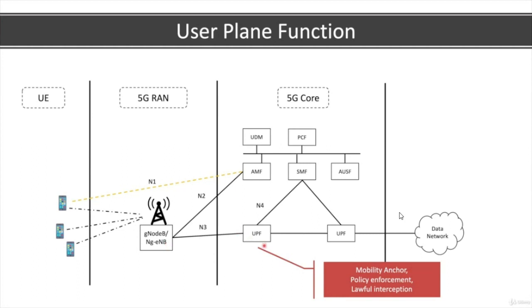Moving into the core network functions: 5G is a mobile network, so the device will move around. One of the main functions of the UPF is to act as an anchor point for the device when it moves around. It also provides the interface towards the internet, which makes it a good place to enforce policies — to ensure the device does not exceed the data in the user's subscription — and also a good point for lawful interception, since all traffic flows through the user plane function.